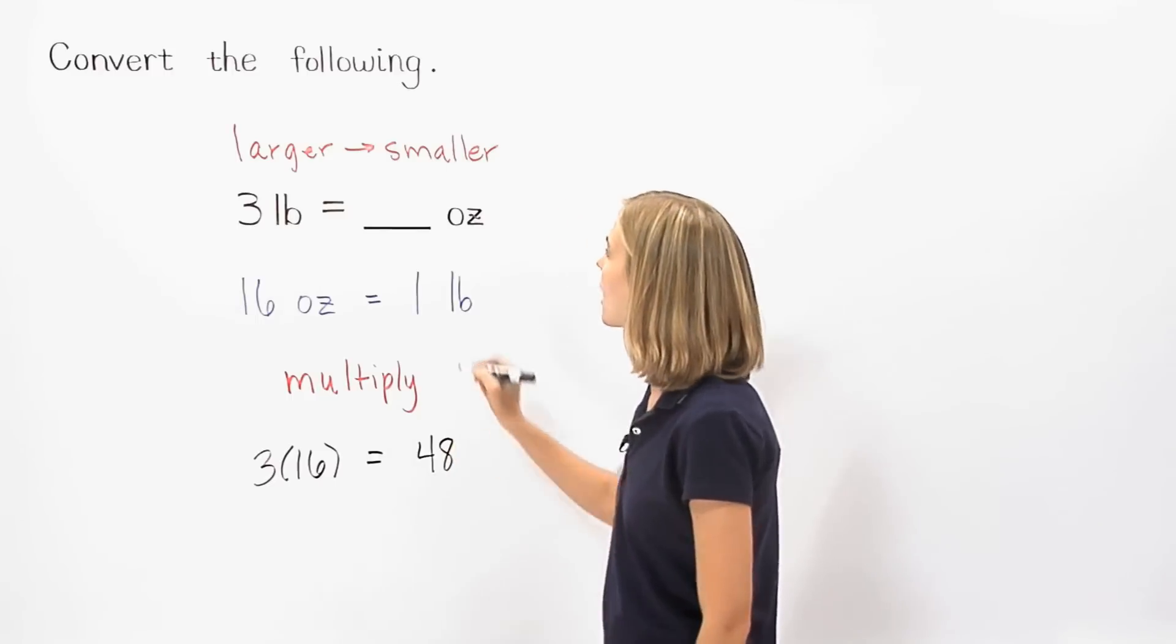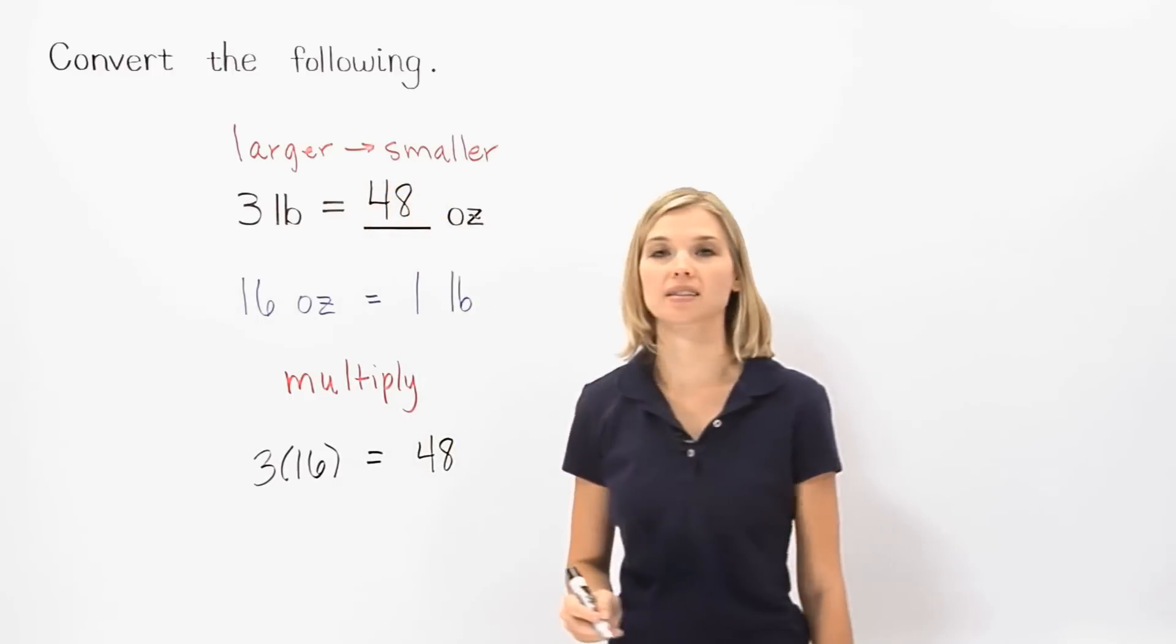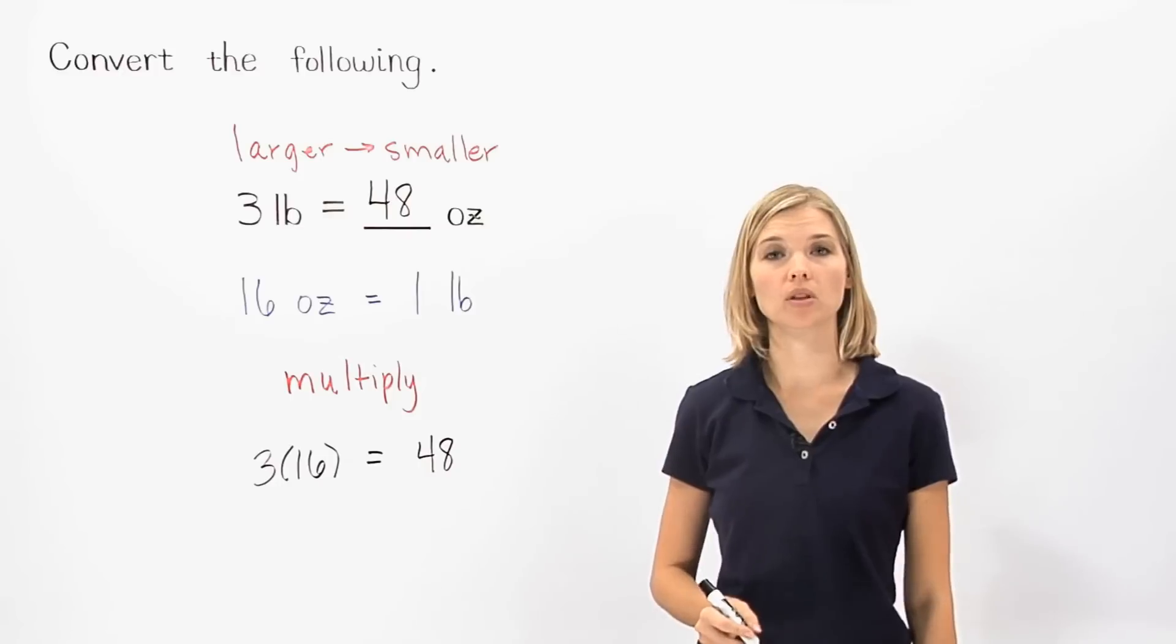So three pounds equals forty-eight ounces, which makes sense. It's important to remember the following rule.